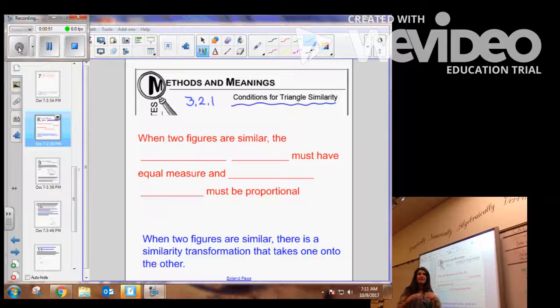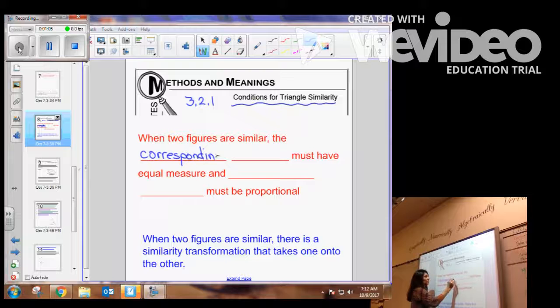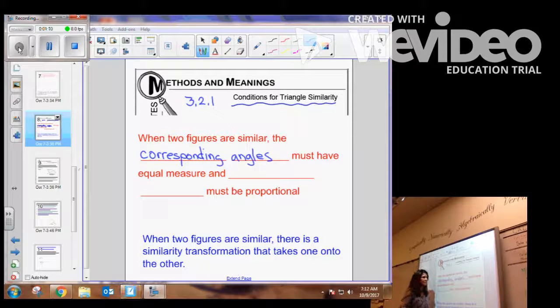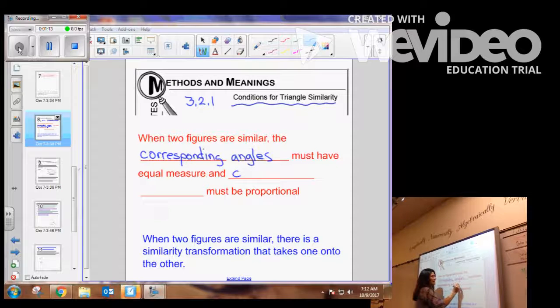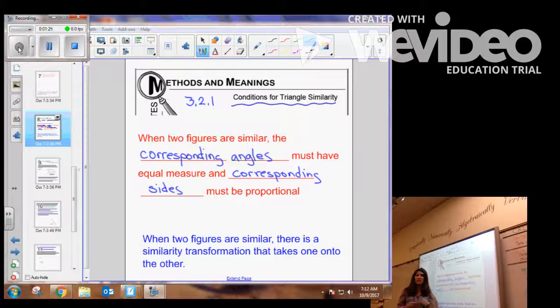Now, first of all, let us make clear what does it mean for two triangles to be similar. When two figures are similar, the corresponding angles, so you should be writing this down neatly in your math notes, the corresponding angles must have equal measure. And corresponding sides must be proportional. And we have been seeing that in our investigations over the last week.